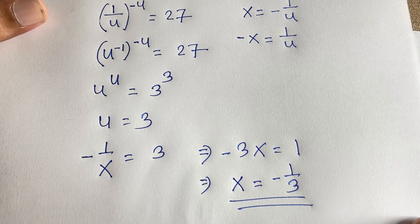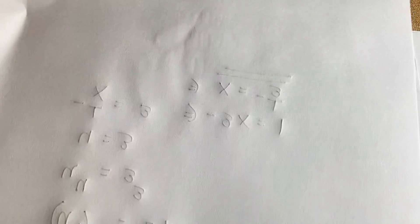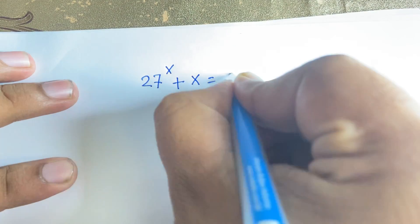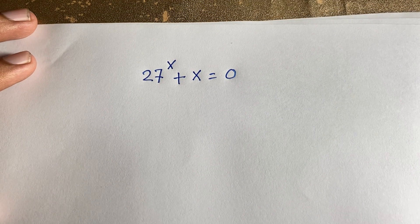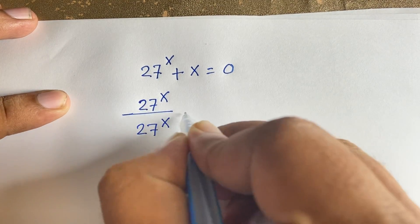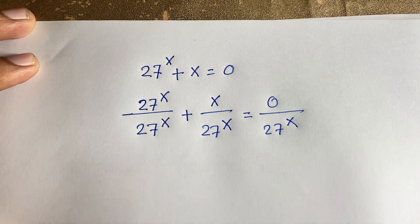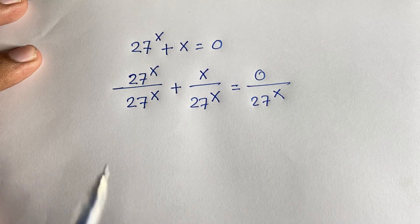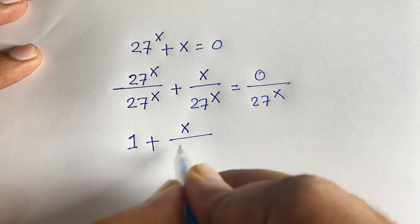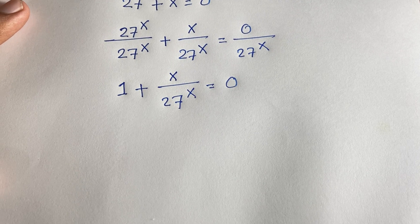Now I solve the same question using the Lambert W function. The equation is 27^x + x = 0. Dividing both sides by 27^x gives 1 + x/27^x = 0.